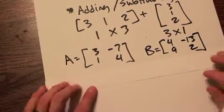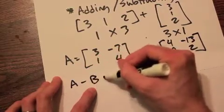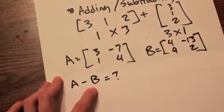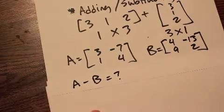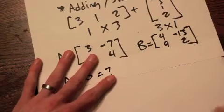And I ask you to find A minus B. I want you to take the matrix A, and subtract matrix B from it. Well, how do you do that?